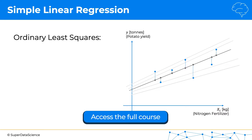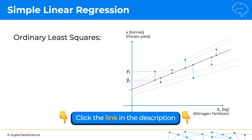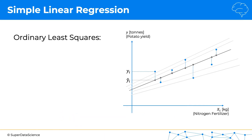For each pair of points we have two values: yi and yi-hat. Yi is the actual amount of potatoes yielded from the farm when a specific amount of nitrogen fertilizer was used. For example, if 15 kilograms of nitrogen fertilizer were used and the farm yielded two tons of potatoes, that's yi. Yi-hat, on the other hand, is what the linear regression we're considering predicts the yield to be.